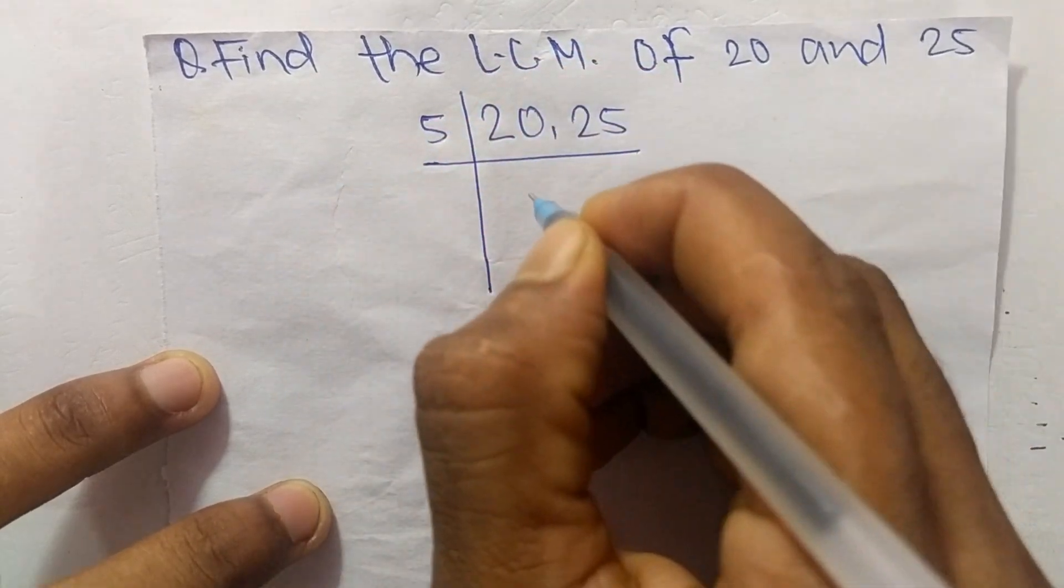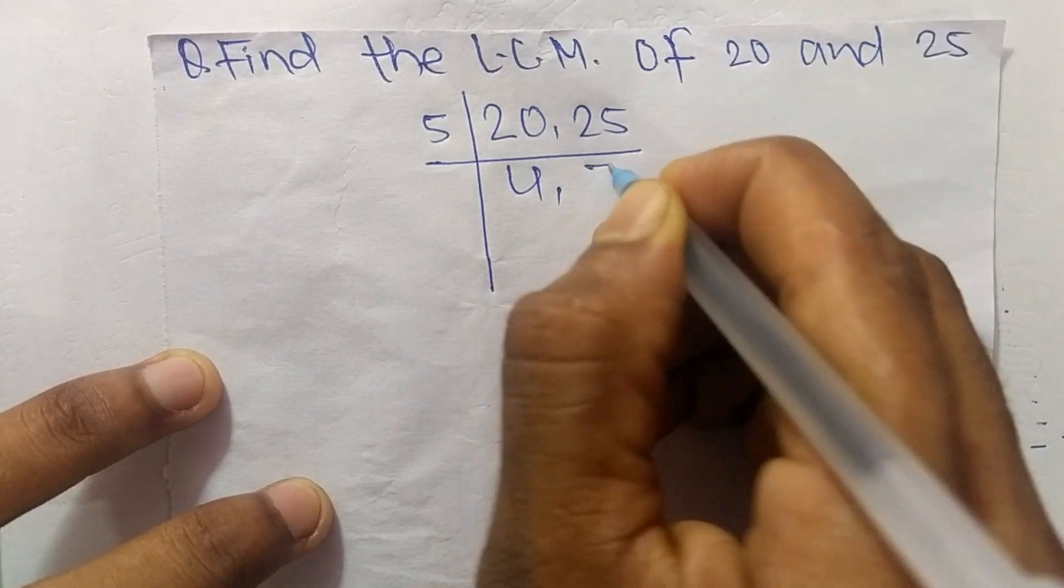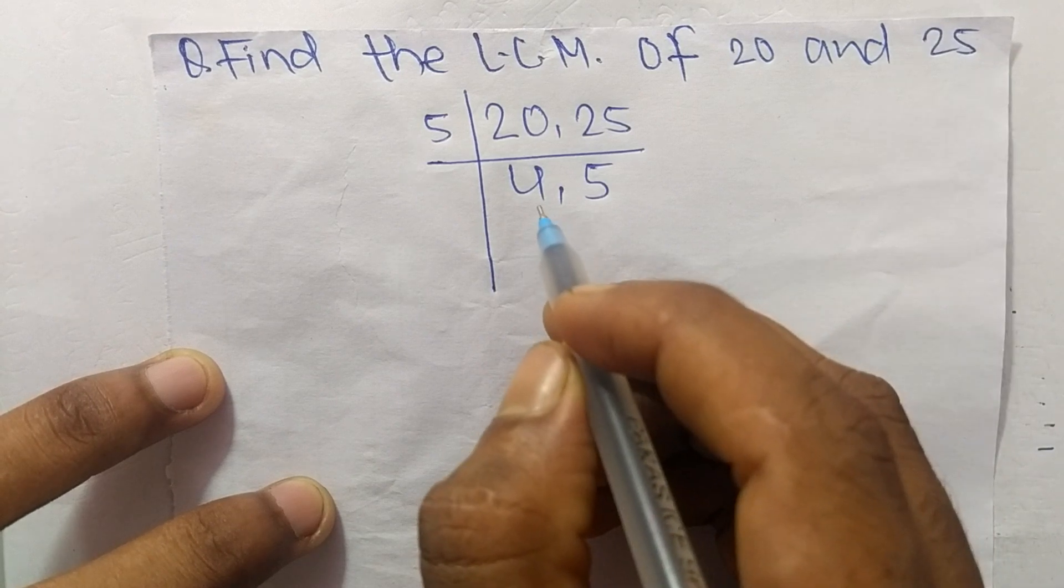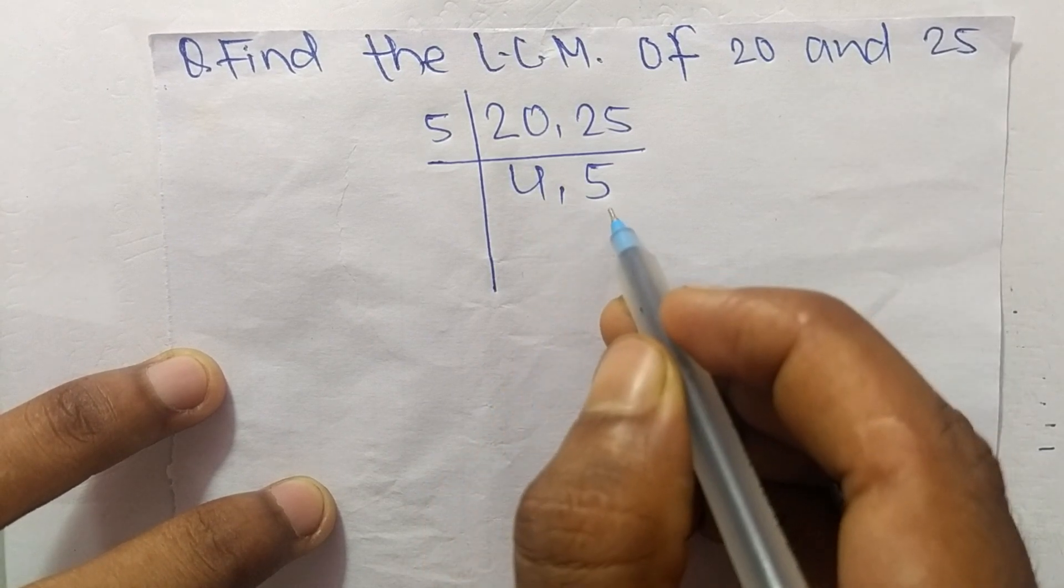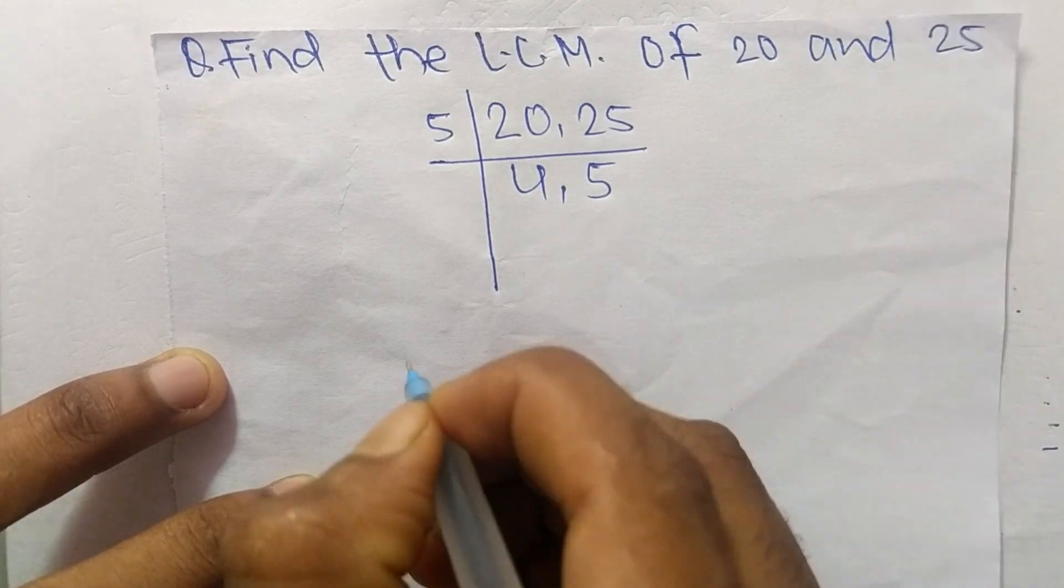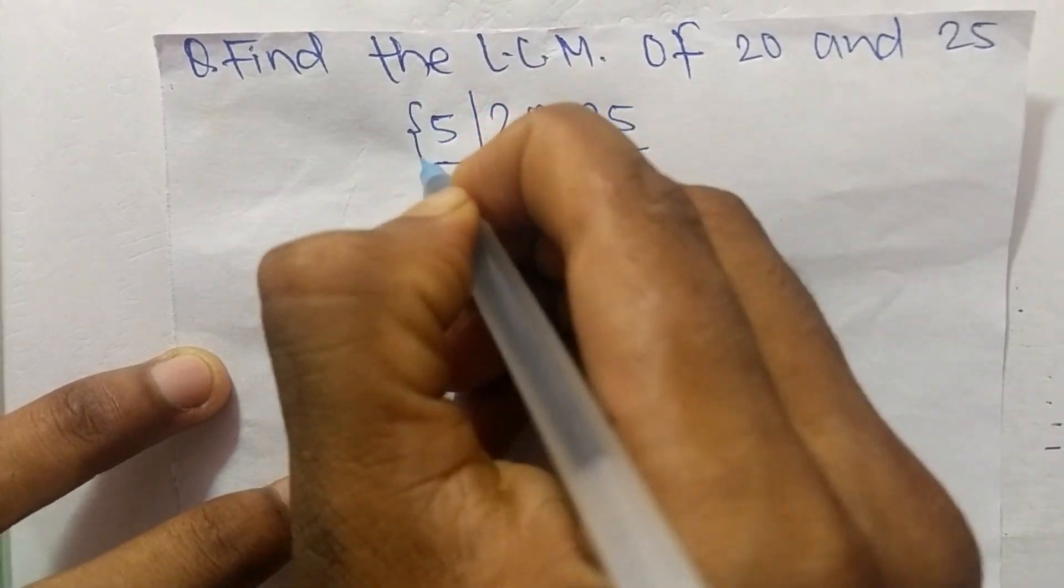5 times 4 means it is 20, and 5 times 5 means it is 25. Now we have 4 and 5, which are not exactly divisible by the same number.